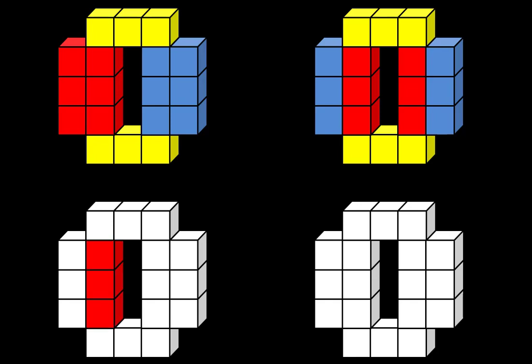Some people see 6 groups of 3. Here's 1 group of 3, 2 groups of 3, 3 groups of 3, 4 groups of 3, 5 groups of 3, 6 groups of 3. And a really creative way of seeing this is to move part of it.